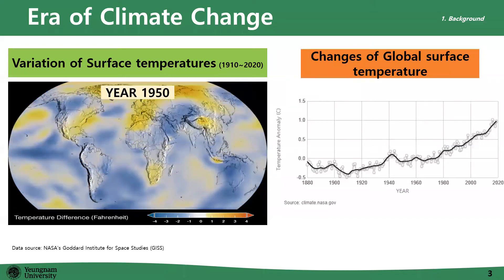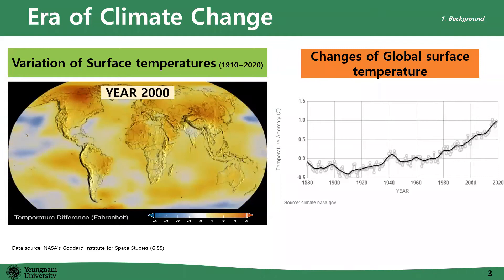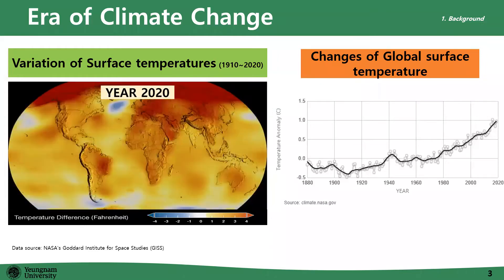I believe we all agree that we are living in an era of climate change. The picture on the left side shows the variation of surface temperature over the past 100 years, and the picture on the right side shows the changes of global surface temperature. These figures explain how serious and important the climate change problem is that all of us are facing today.